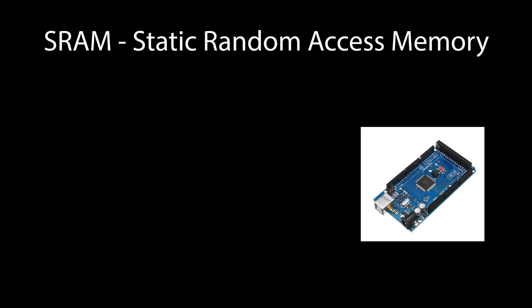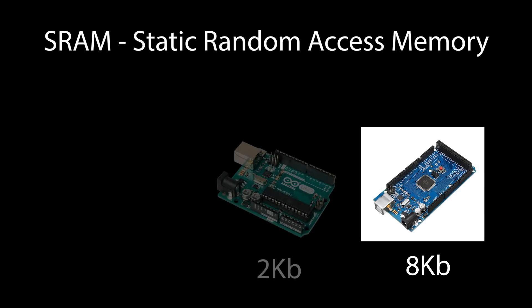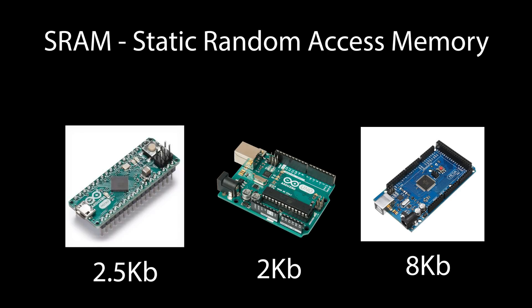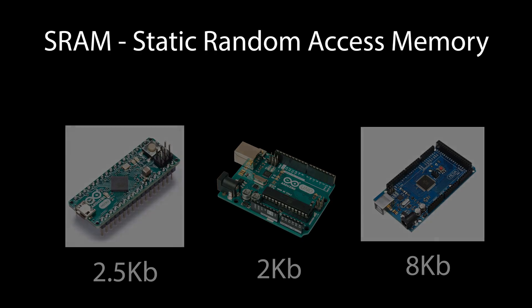All of the Arduino boards use SRAM, which stands for Static Random Access Memory. The Mega 2560 has the most SRAM with eight kilobytes, which is four times more than the Uno and 3.2 times more than the Micro. With more SRAM space, the Arduino has more space to create and manipulate variables when it runs.